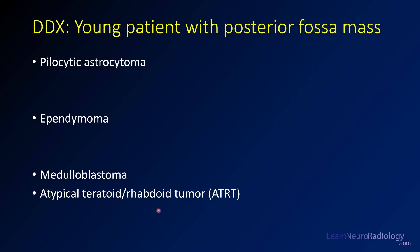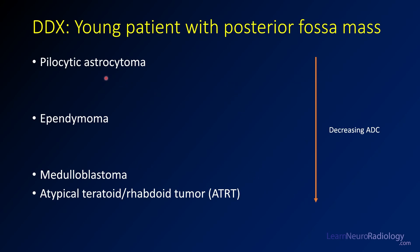Atypical teratoid rhabdoid tumors (ATRT) are also very aggressive lesions, often arising in even younger patients — the most common patient for ATRT is going to be six months old or younger. These tumors kind of cluster together in terms of decreasing ADC values, so as diffusion values get darker on ADC they're more likely to be more aggressive, and you can often differentiate these by their ADC value.